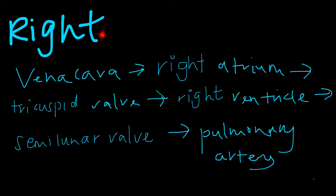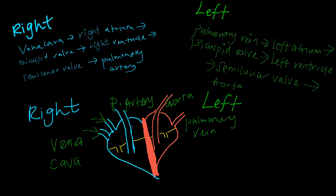On the right side of the heart, the superior and inferior vena cava bring in deoxygenated blood from the whole body into the right atrium. Once the right atrium is filled and contracts, blood passes through the tricuspid valve into the right ventricle. Once the right ventricle is filled and contracts, it passes through the semilunar valve into the pulmonary artery. Relating back to the drawing: vena cava brings deoxygenated blood into the right atrium, through the tricuspid valve into the right ventricle, through the semilunar valve into the pulmonary artery, heading towards the lungs to get oxygenated again.